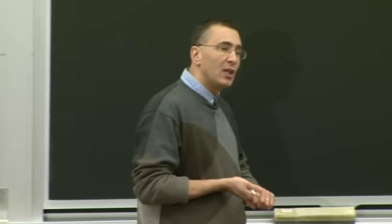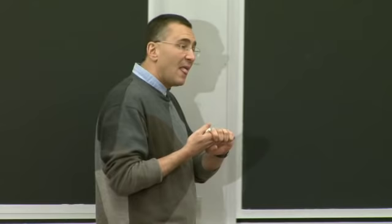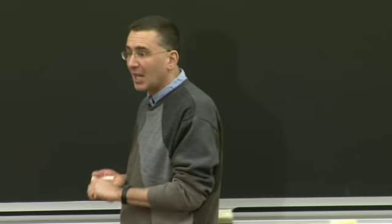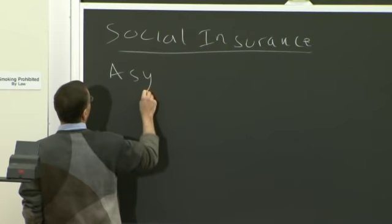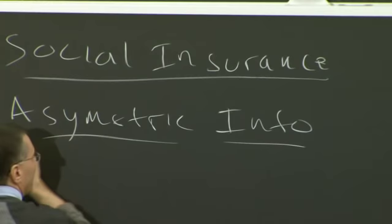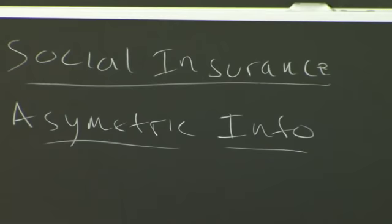The basic question is: in this course we've learned the government serves to screw up the market if the market's working well. The only time the government can help is if there's a market failure — if there's something wrong with the market. In this case, the market failure in the context of insurance is the problem of asymmetric information: information that is held differentially between parties on either side of a transaction. When there's asymmetric information, when different parties know different amounts about a transaction, that can lead to market failures.